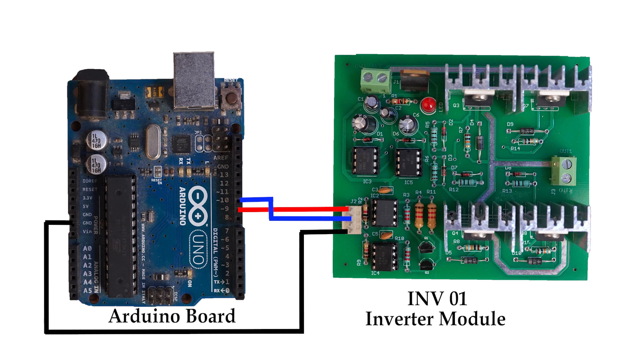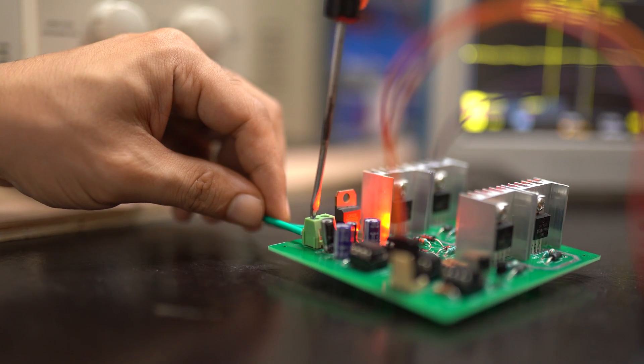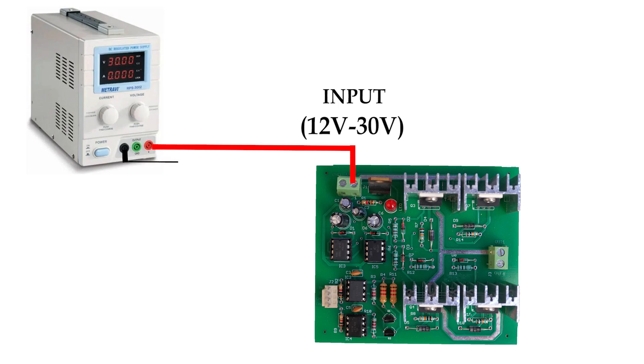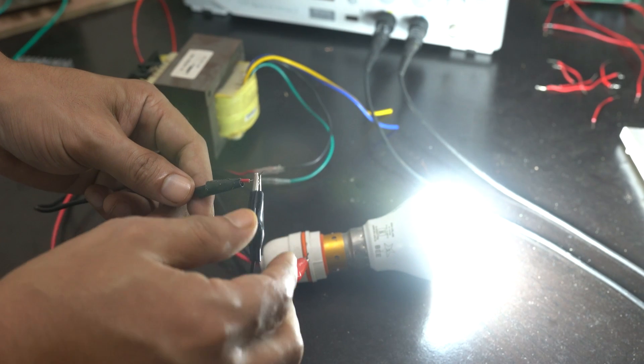It can be controlled very easily using an Arduino board. You need to give an input voltage to the module in the range of 12 volts to 30 volts from any DC power supply or a 12-volt battery. At the output terminals of the module, you can connect any AC load such as a lamp, fan, or any three-phase induction motor.